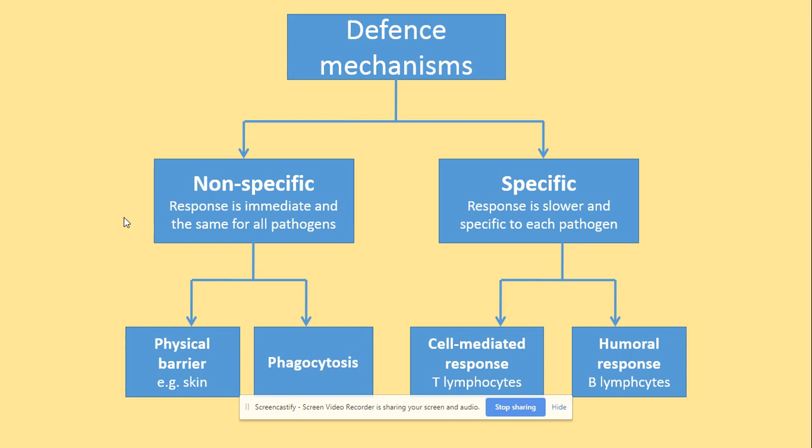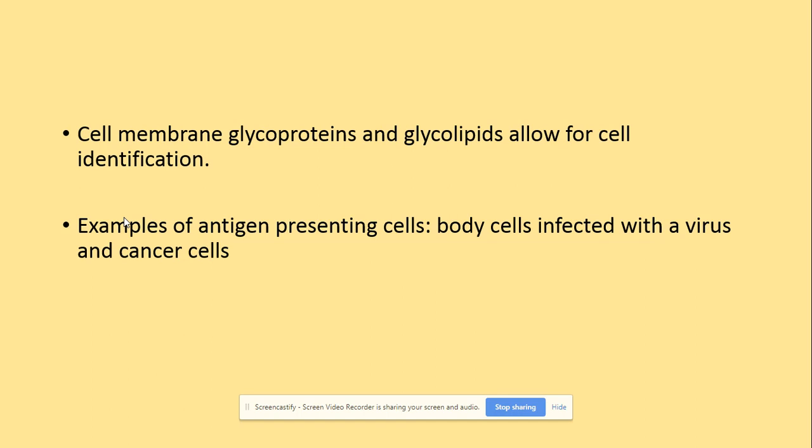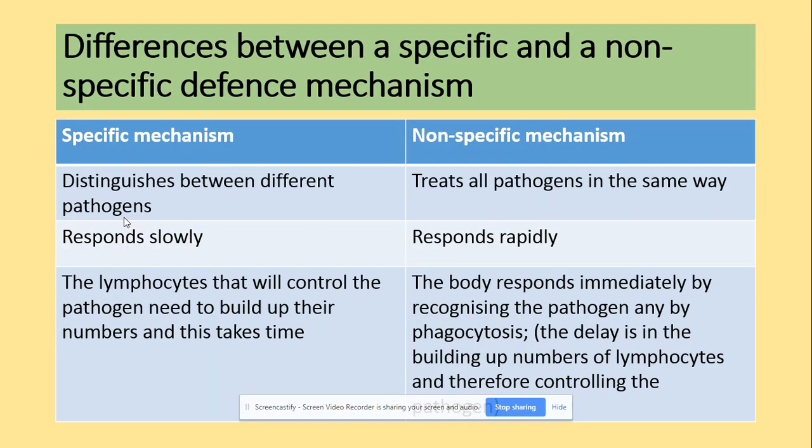Specific mechanisms involve T cells and B cells. The process involving T cells is called the cell-mediated response, and with B cells it's the humoral response. As a quick recap from section 2: glycoproteins and glycolipids are carbohydrates combined with proteins or lipids, found on the cell surface membrane, and their role is to identify cells. Examples of antigen-presenting cells include B cells and macrophages. T cells are not antigen-presenting cells.